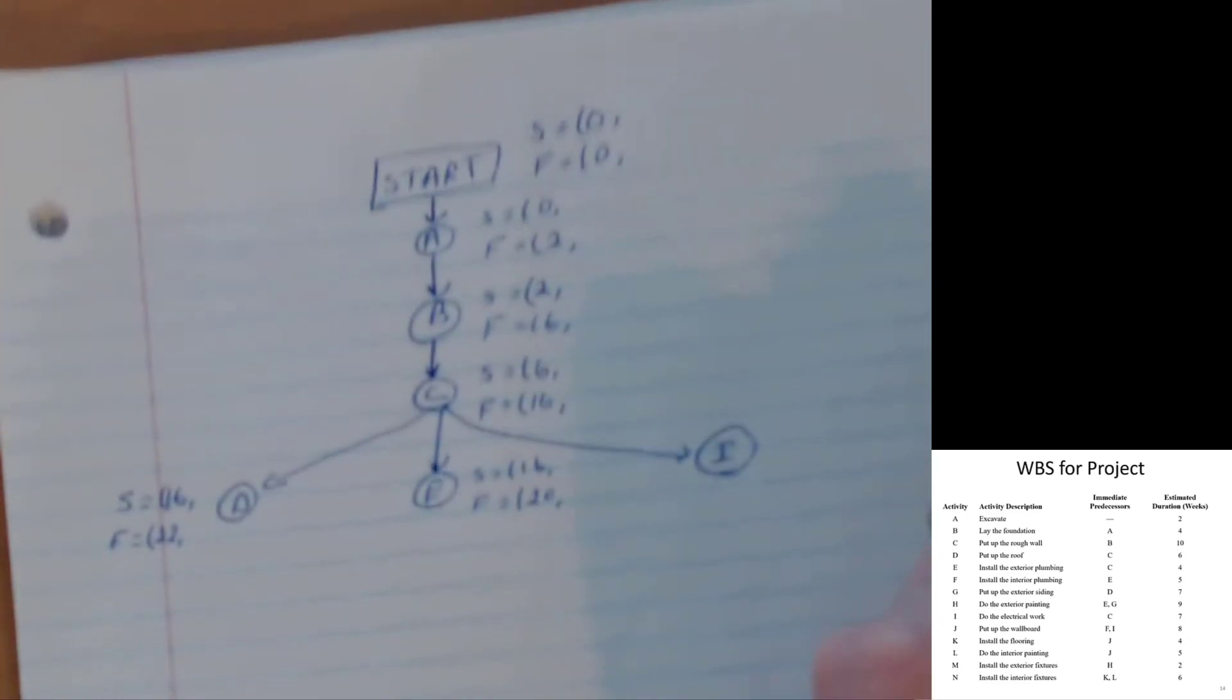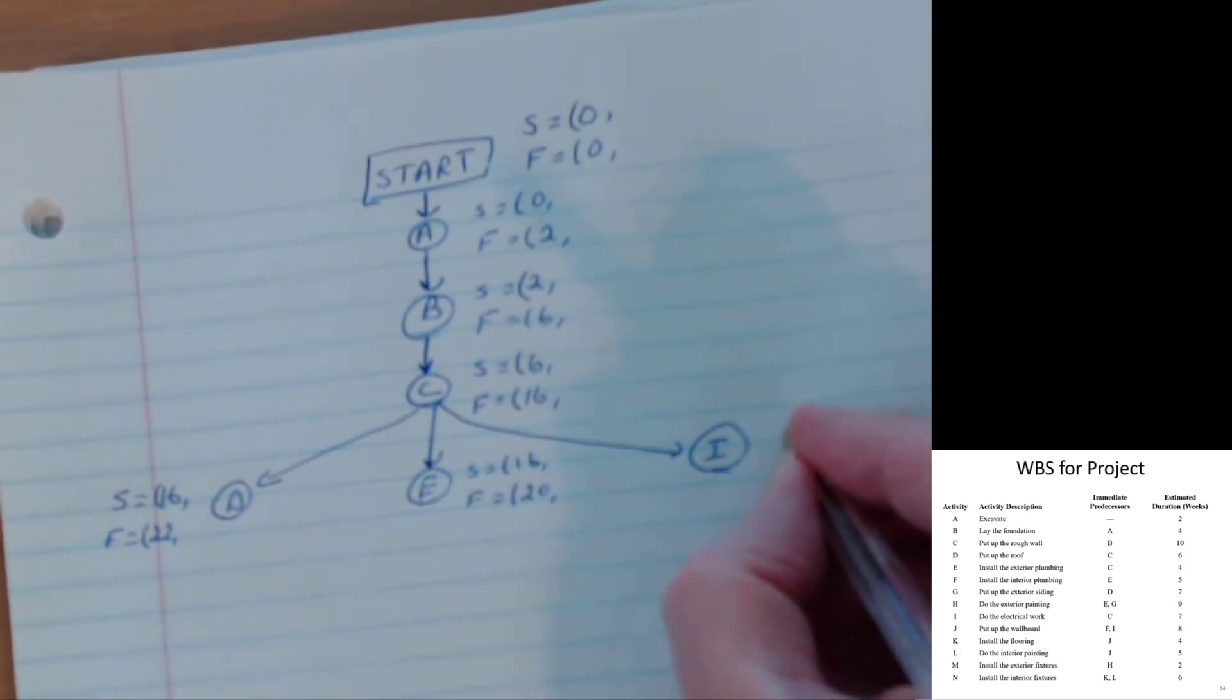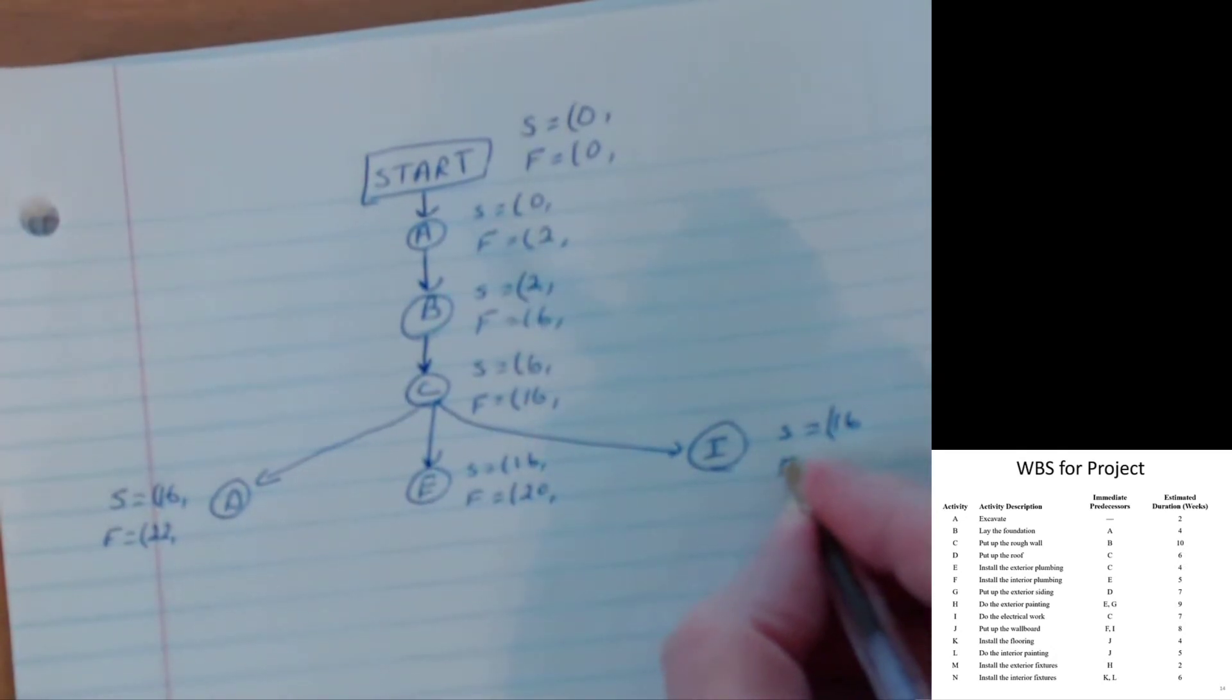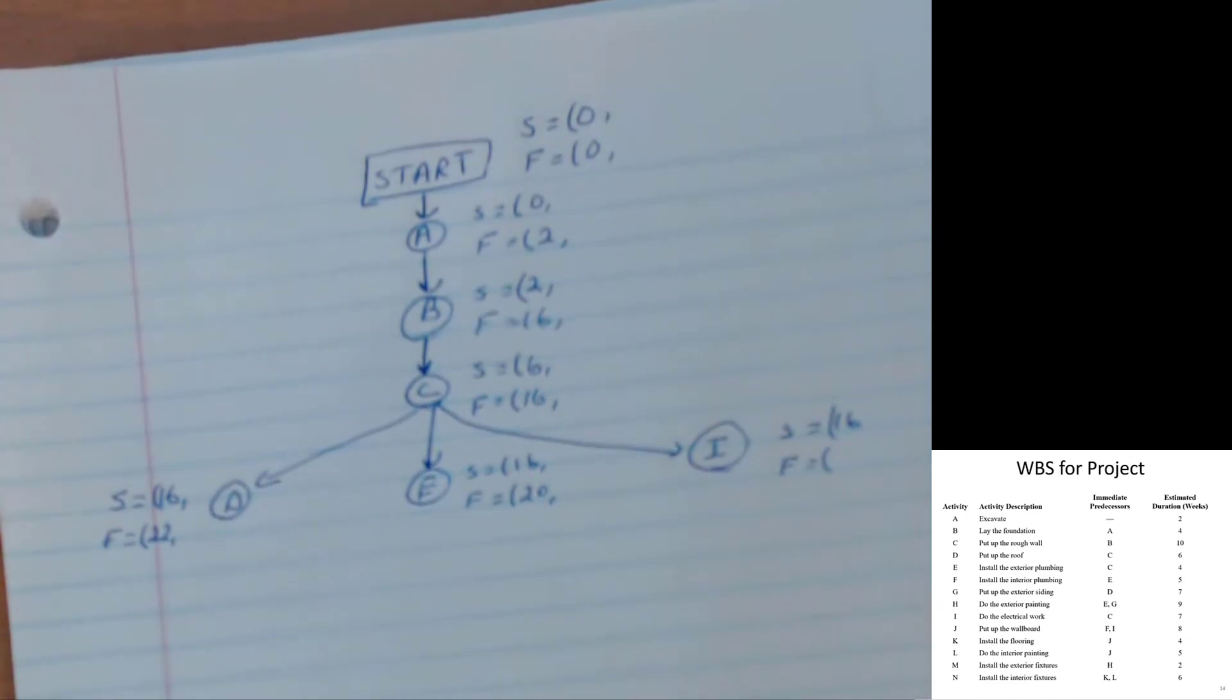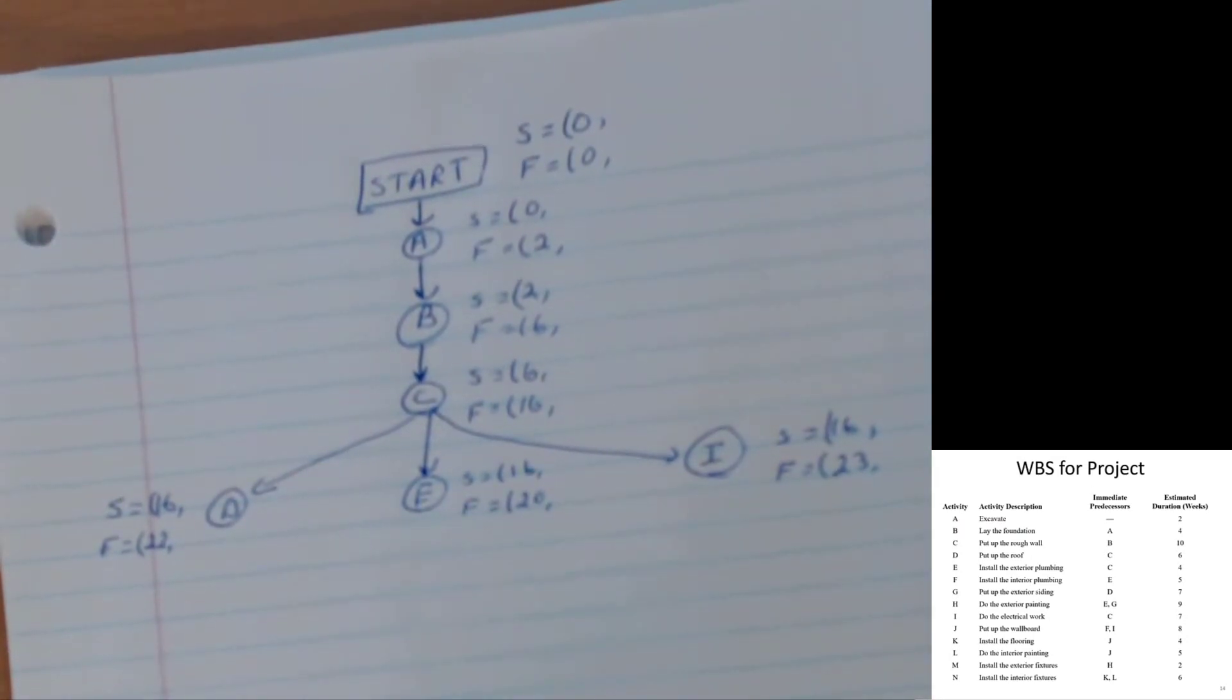And then I, way down there. Again, I can start on period sixteen when C is finished. And when can I finish? I takes seven weeks. So sixteen plus seven is twenty-three. And so we see that I can finish in period twenty-three.